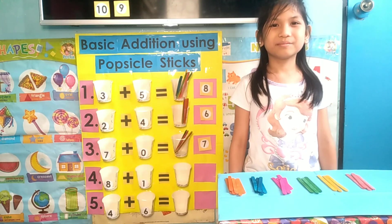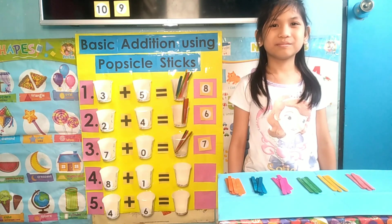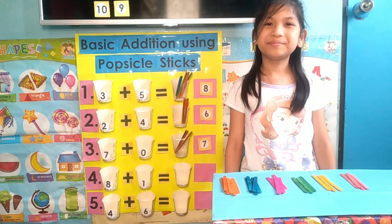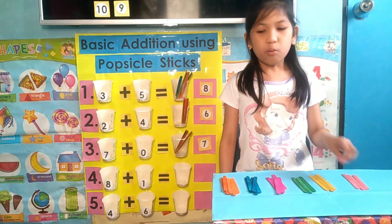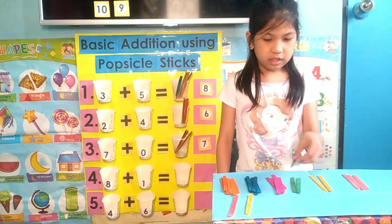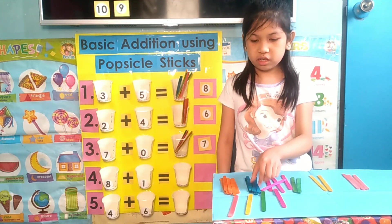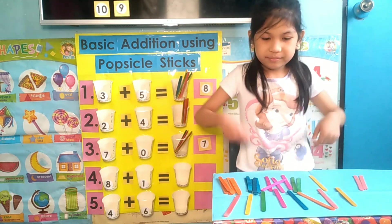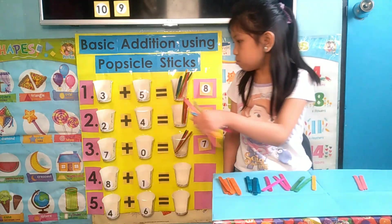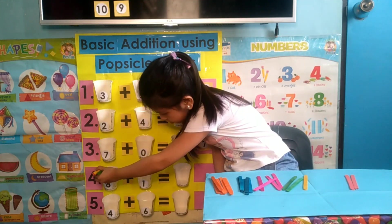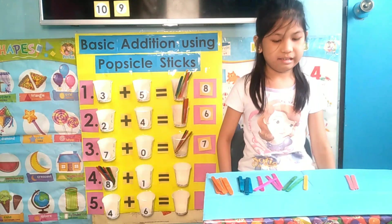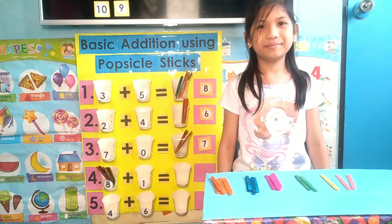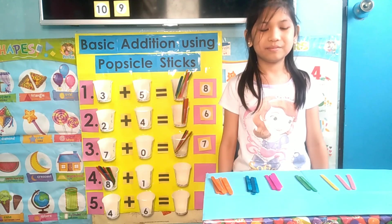Okay, so our next number is number four. Okay, Leia, look at number four. What is the first number inside the first cup? Eight! Okay, you count eight popsicle sticks and put it inside the cup. One, two, three, four, five, six, seven, eight! Now, what is the next number inside the second cup? One! Okay, you count one popsicle stick and put it inside the cup. One!